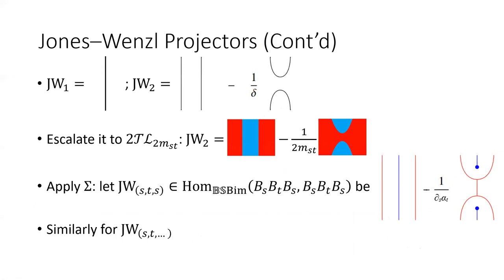Let me remind you that the quantum number is defined as in the formula. Although it doesn't look like a polynomial in delta, you can expand the denominator using the geometric series and change variables to get a polynomial. We can compute a few simple cases: JW_1 is in the endomorphism of one dot, and the cap/cup conditions are vacuous so JW_1 must be the identity. For JW_2, applying the recursive formula gives a term with one over delta, which is why we need to enlarge the coefficients to the fraction field.